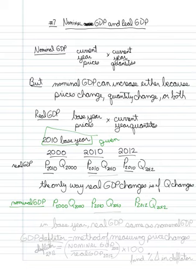Here, everything just changes. Take note: in the base year, real GDP is the same as nominal GDP, and you can see that here and here. Now, what we do with this information is we then calculate a GDP deflator.